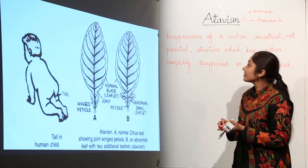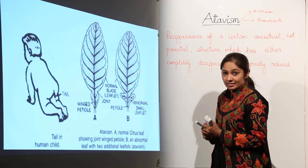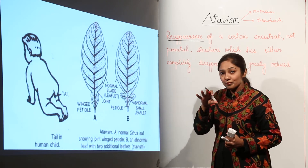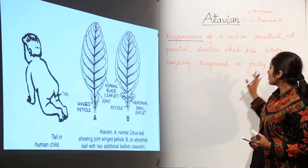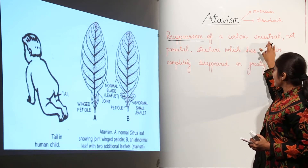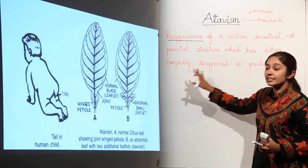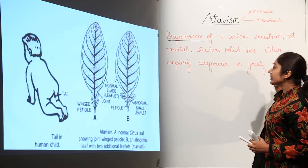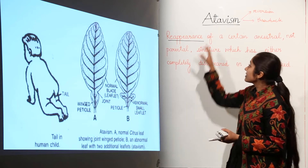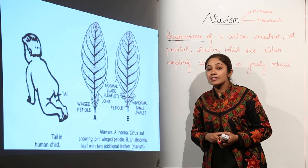Atavism means reappearance of certain ancestral characteristics — the traits that are not present now — they reappear in some reduced form. So reappearance of a certain ancestral, not parental, structure which has either completely disappeared or greatly reduced. When such characters appear, this is known as atavism.